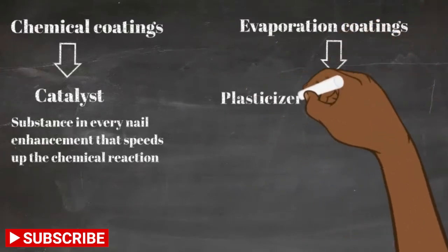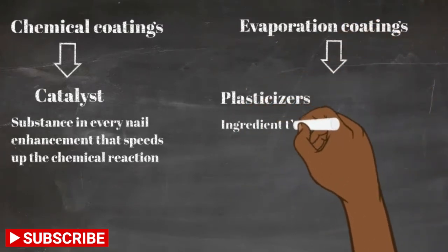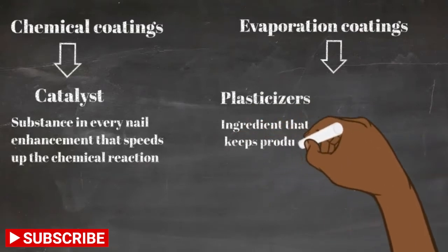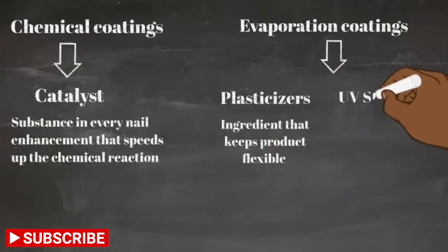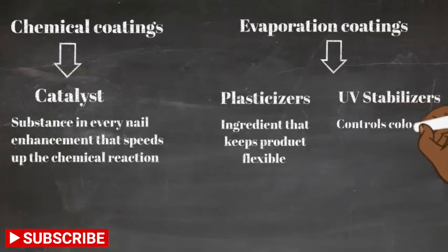Coatings that evaporate contain plasticizers - that's an ingredient that helps keep the product flexible - and they also contain UV stabilizers. This helps control the color stability and prevent sunlight from fading and discoloring the product.